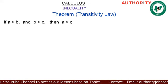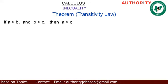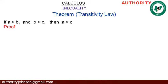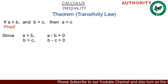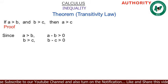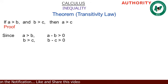Transitivity law: if a > b and b > c, then a > c. To prove this: since a > b, by principle four, a − b > 0. And since b > c, we have b − c > 0.